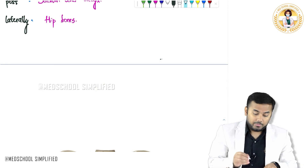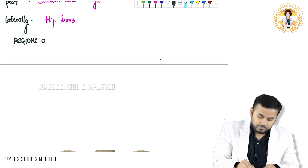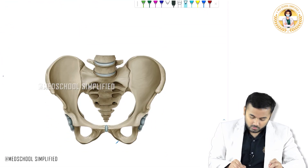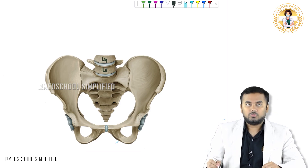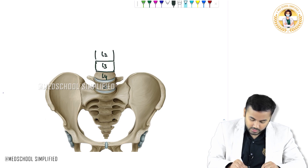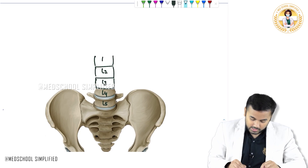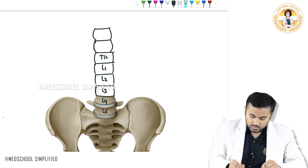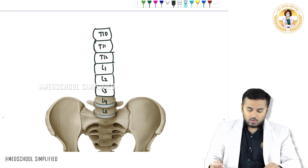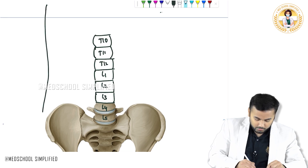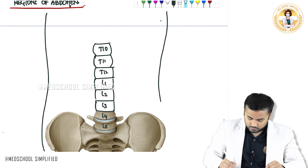Now let us look at another important topic — the regions of the abdomen. In the regions of the abdomen, you know that this vertebra here is your L5 vertebra. Just above that you have got L4 vertebra. After L4 the next vertebra is L3. This is very important topography guys, and here you have got L1.